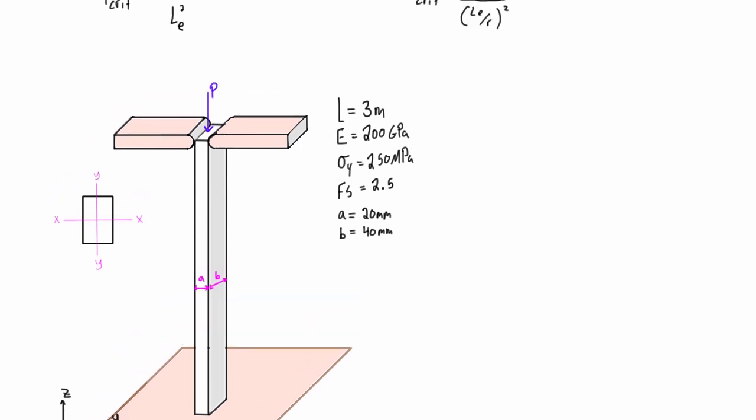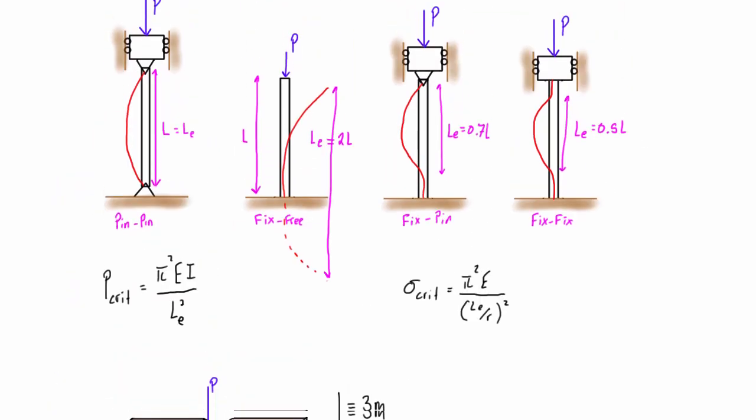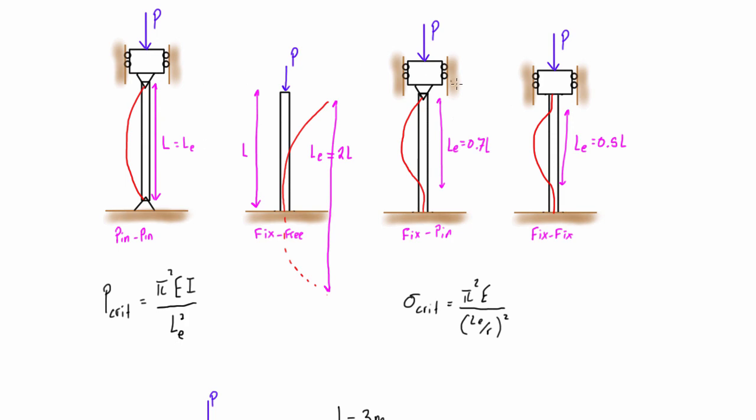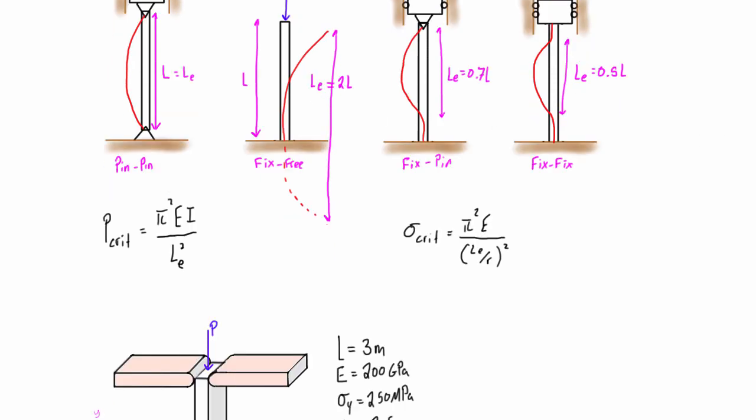Going back to a couple videos ago, we had these situations. For a fixed connection at the bottom and a pin at the other end, the effective length we're using in our P critical formula is 0.7 times the actual length of that column. For a column that's fixed on one end and free at the other end, we're using an effective length of 2 times the actual length. Depending on which way we're considering buckling, we're going to use each of those.